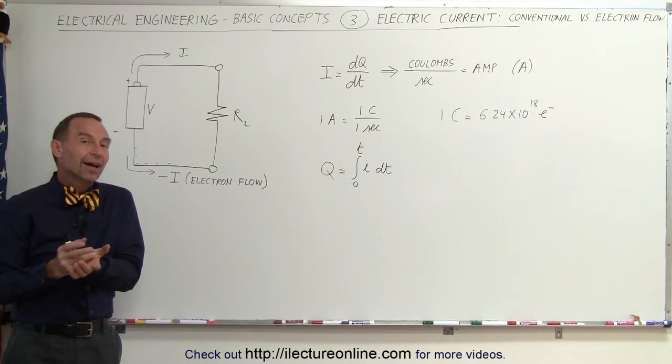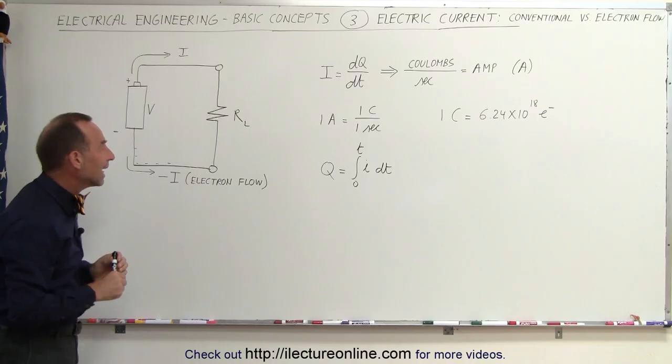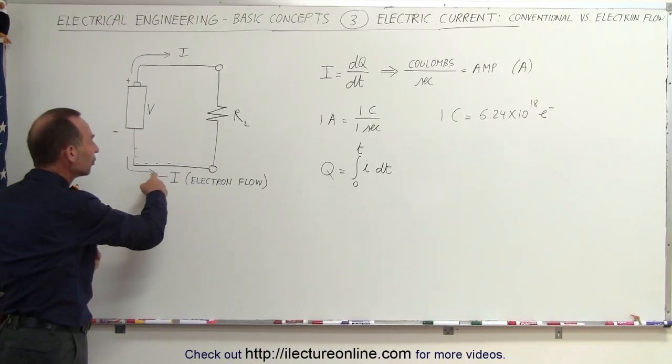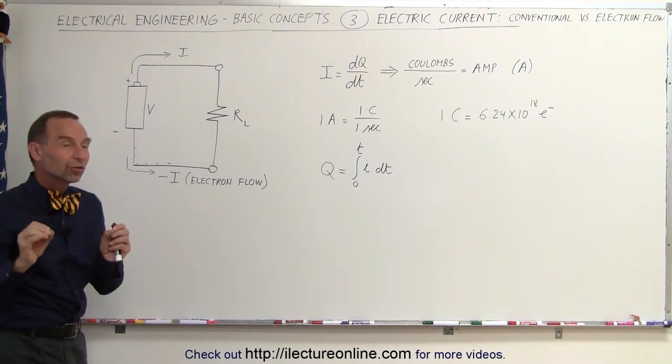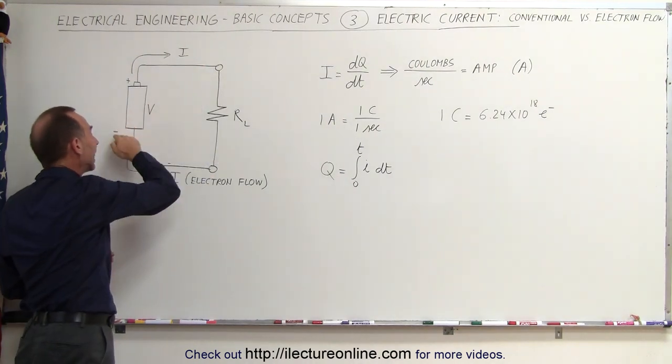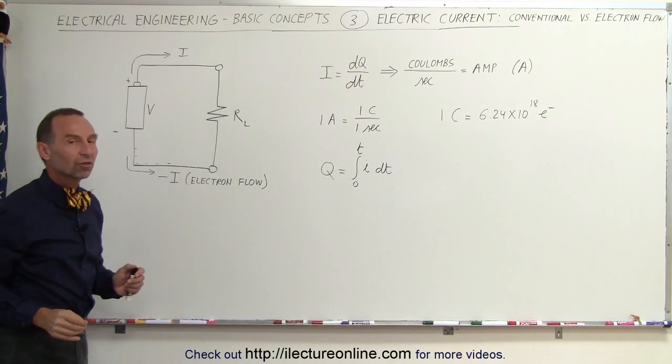However, we all now realize that it's the negative charges that are actually doing the moving. It's the negative electrons in the atoms of material that are moving through the circuit. In essence, the current, the real current, the real charges are moving in the opposite direction from the negative end of the battery to the positive end of the battery through the load resistor.